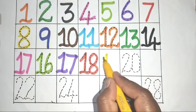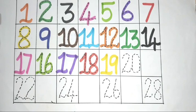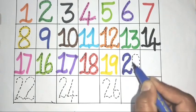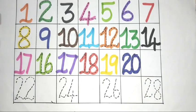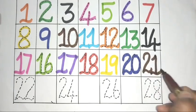One, nine, nineteen. Two, zero, twenty. Two, one, twenty-one.